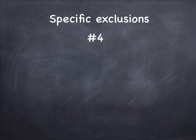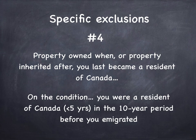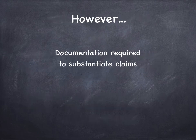Number four is for the short-termers — people who didn't spend all that much time in Canada. Any property that was owned when or inherited after you last became a resident of Canada can be excluded on one condition: you were a resident of Canada for five years or less in the 10-year period before you emigrated. Documentation is required to substantiate those claims.